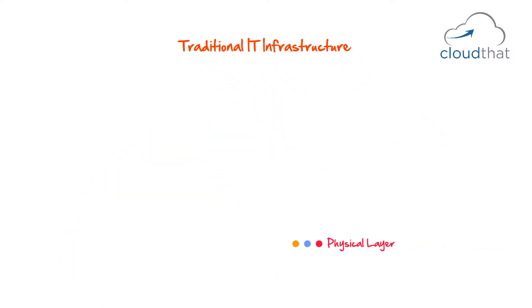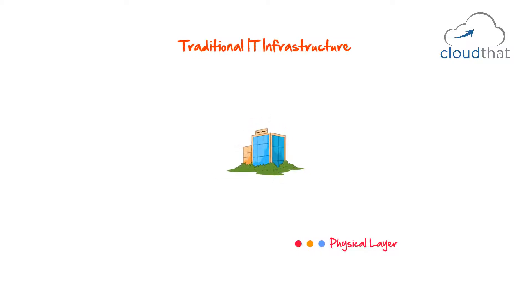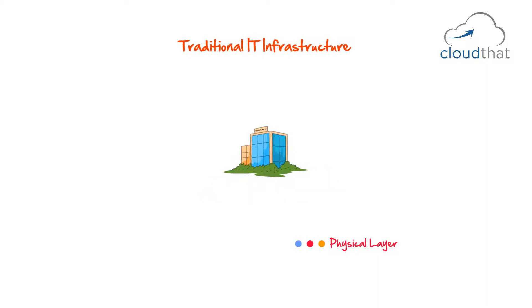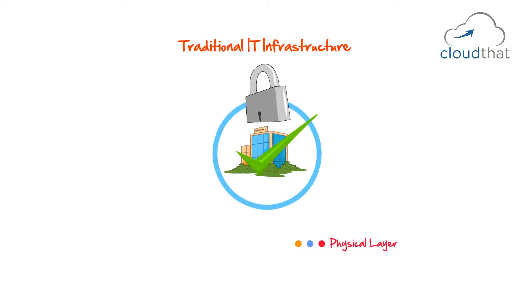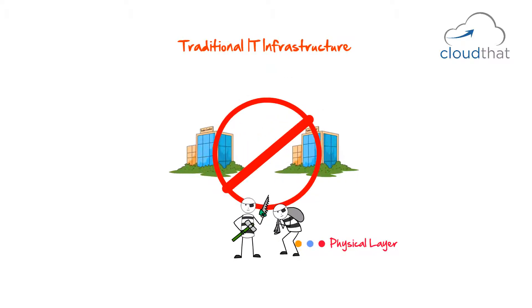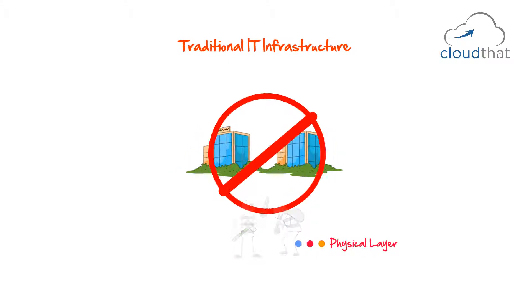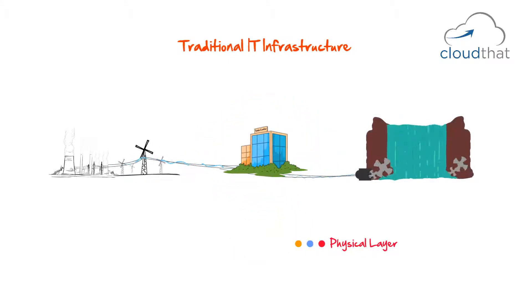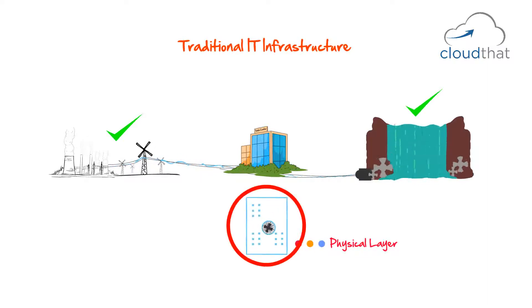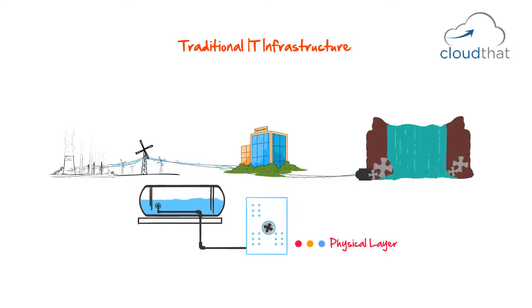The first and bottom-most layer is the physical layer. This involves figuring out things like where to put your data center. It has to be a good place — not in a flood zone or earthquake zone. The data center should be secure; it should not be possible to physically break into it. It should have a good power supply, possibly from two grids, with a backup generator and a huge tank for diesel storage. It will also need cooling equipment.